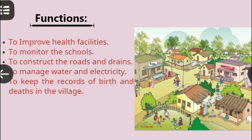As we have discussed, Gram Panchayat is formed at the village level. To improve the condition of the village, a Gram Panchayat performs the following specific functions: it improves health facilities, monitors the schools, constructs roads and drainages, arranges water and electricity, and keeps the records of births and deaths in the village.